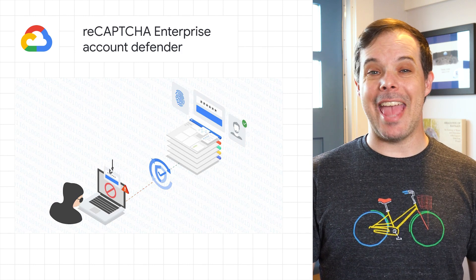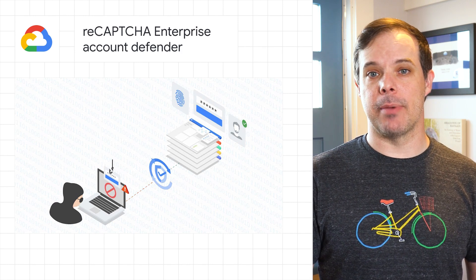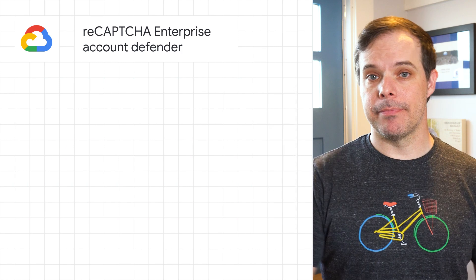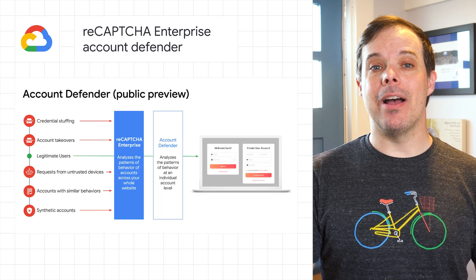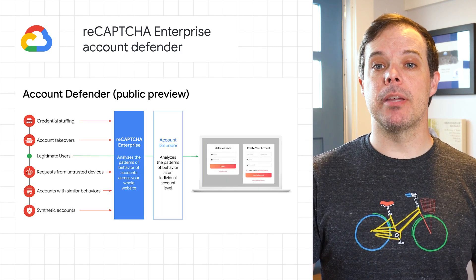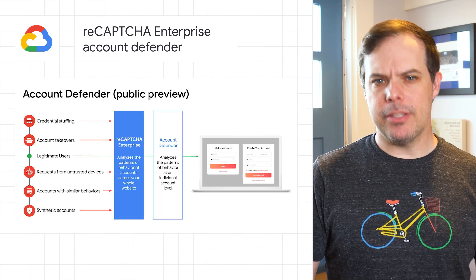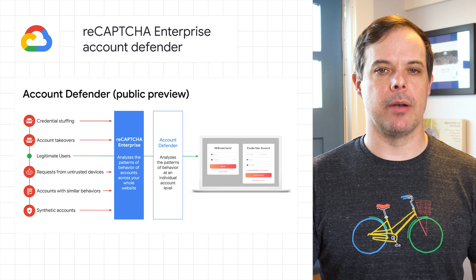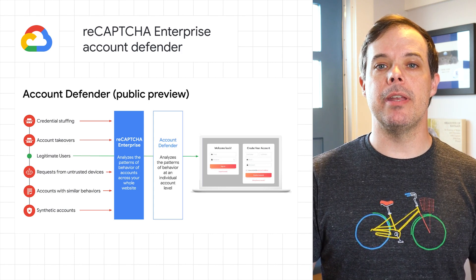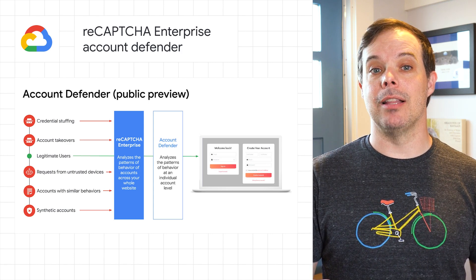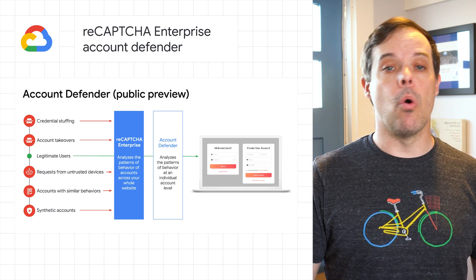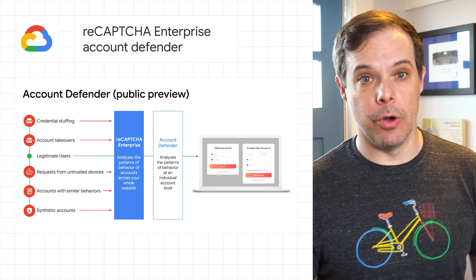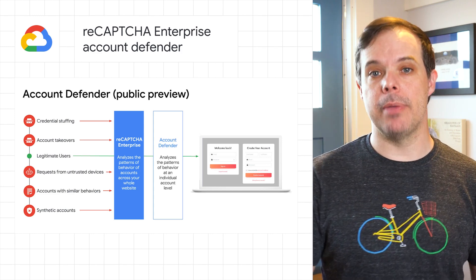ReCAPTCHA Enterprise is Google's online fraud detection service that can be used to prevent fraud and attacks by scripts, bot software, or humans. And now, Account Defender is in public preview. It's a new feature built into ReCAPTCHA Enterprise that helps you determine if an action aligns or deviates from the account owner's typical behavior. Links to get started are on the post.